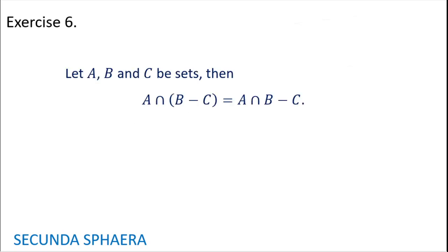So let's get started. This is part two. Starting with exercise number six: let A, B, and C be sets. Then A intersection with (B without C) is equal to (A intersection B) without C.